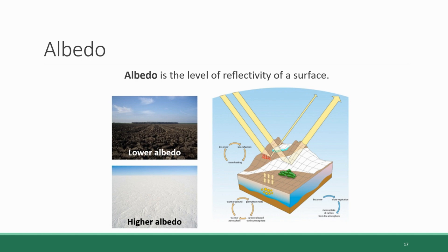The illustration on the right represents this — the fact that solar energy comes into the Earth, it hits different surfaces, and then depending on the reflectivity of that surface, depending on the albedo, some amount will be bounced back and escape out into space. And obviously, if that energy is being reflected back out into space, it's not being used to heat the Earth.